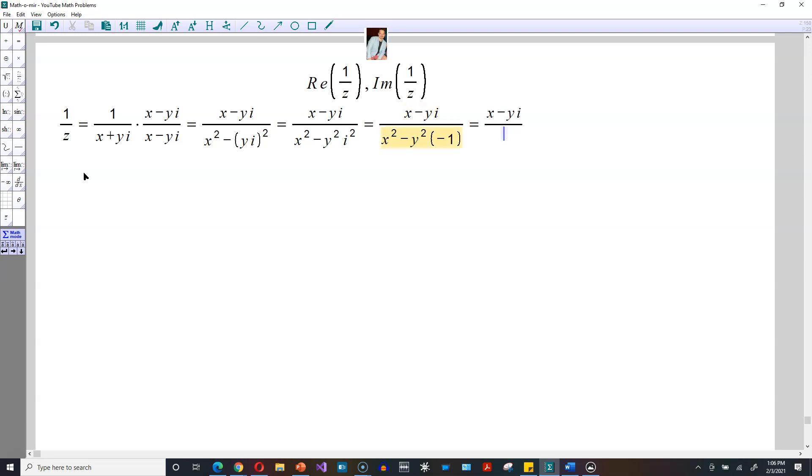Continue here, it's going to be x minus yi at the top. At the bottom, x squared. And then negative y squared times negative 1 is going to give you a positive y squared.